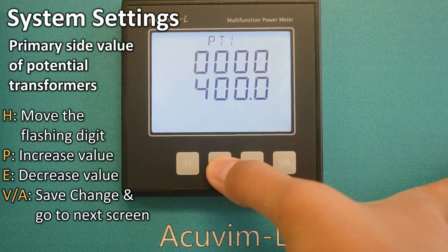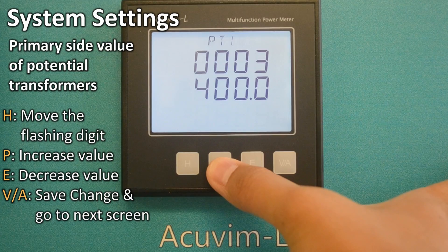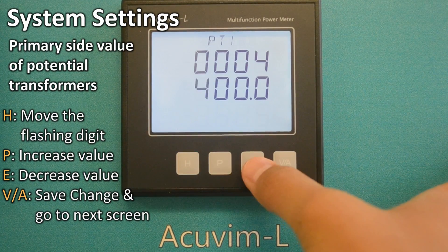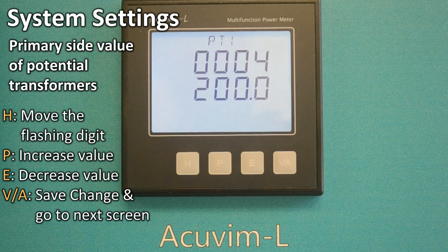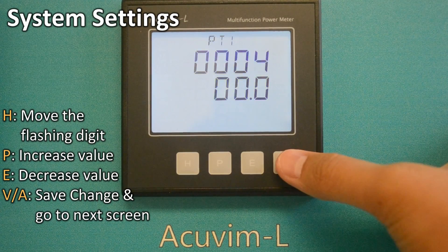Press H to move the flashing digit, press P to increase or E to decrease the value, making the change for example to 4200. Pressing VA will then save the change.